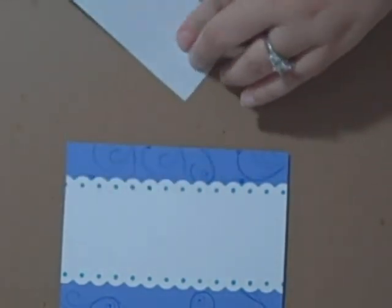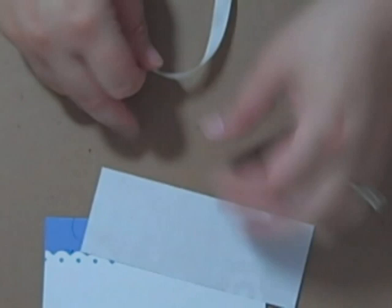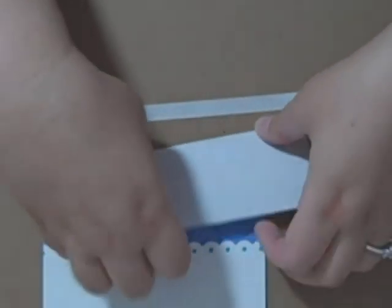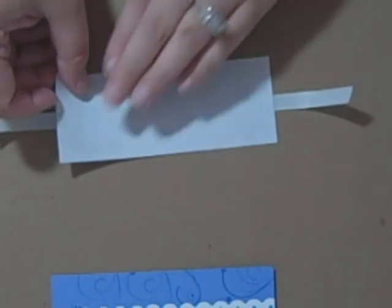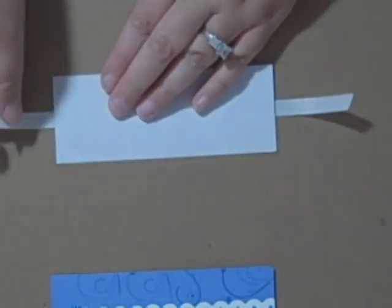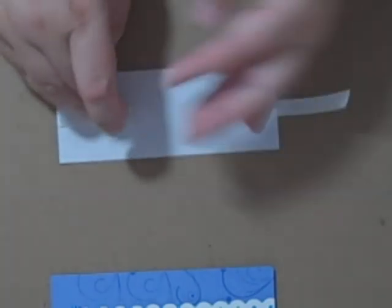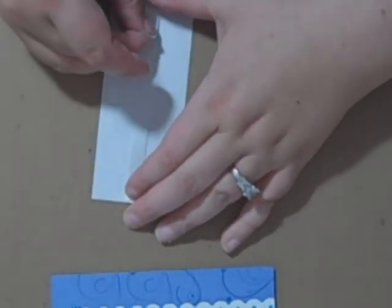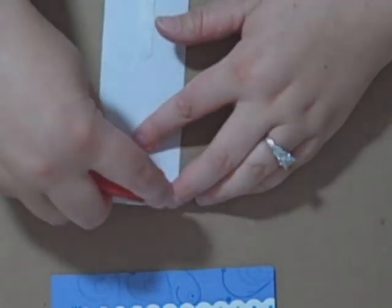I just have some white satin ribbon here. So I'm just going to measure a little bit. And I'm going to just lay my paper over here. I'm going to add a little bit of sticky tape. And we're just going to stick the ribbon down before I stick it to the card.